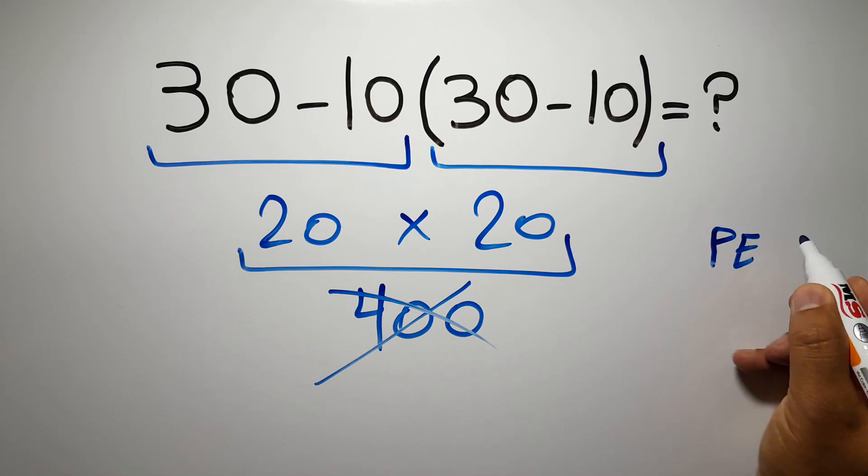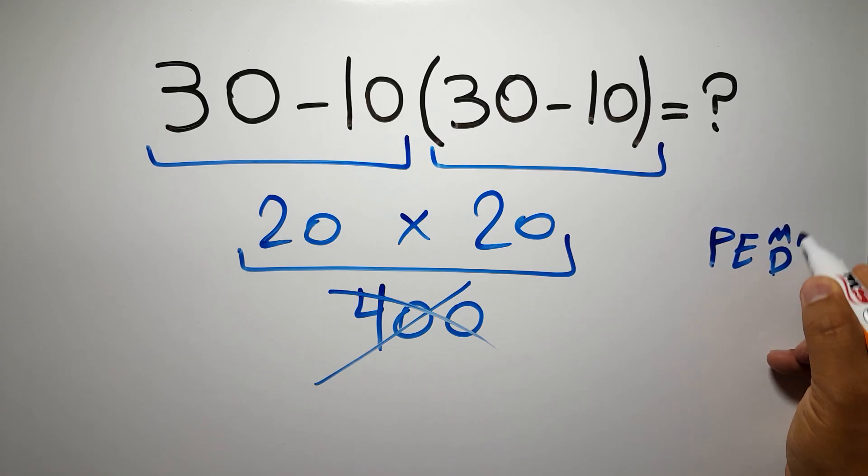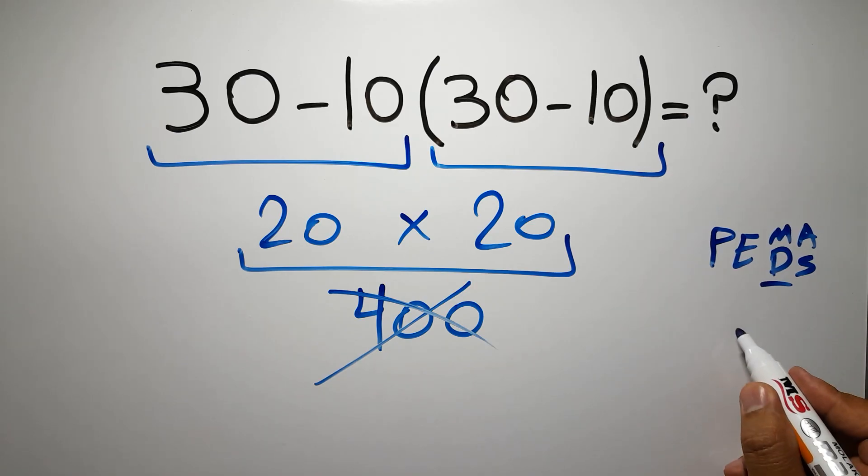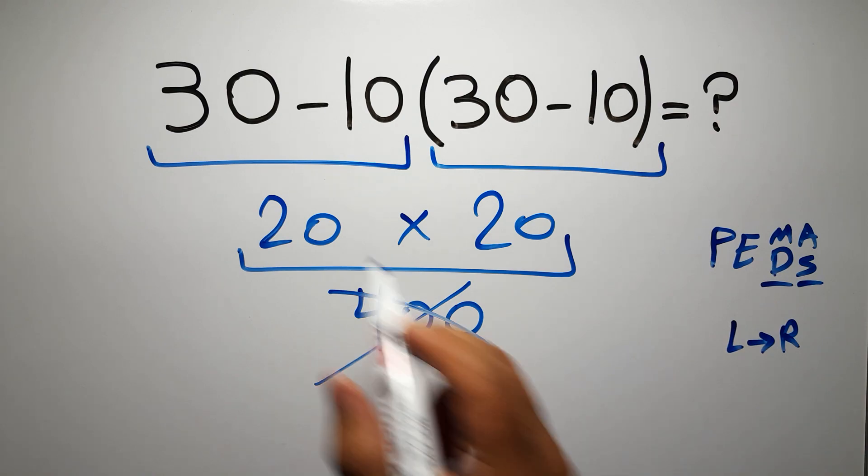Parentheses, then exponents, then multiplication or division, and finally addition or subtraction. Remember that multiplication and division have equal priority and we have to work from left to right, and the same applies to addition and subtraction.